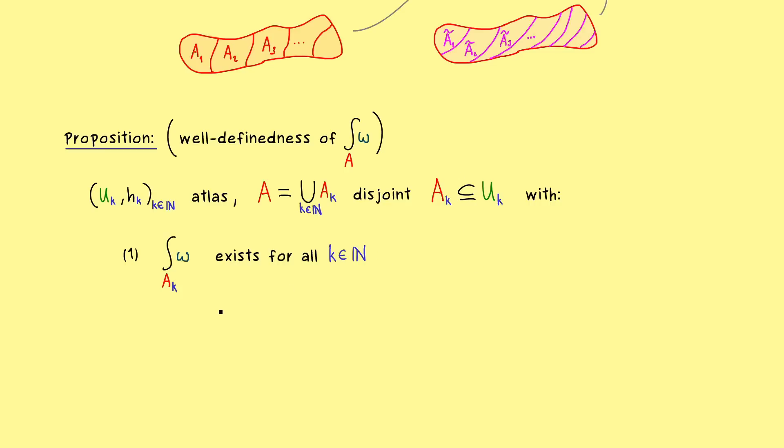So in short, the set Ak lies completely in the set Uk. And there we just have to check that two things are satisfied. And the first one is that all the integrals over Ak exist. You know what it means? If we translate this integral to Rn, then the integral over the absolute value exists. So it's finite. More precisely, we consider the component function of omega and everything with respect to the chart Hk. And now the second requirement is that we can form the whole sum of these elements and we still get out a finite value.